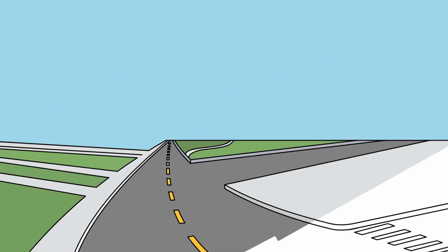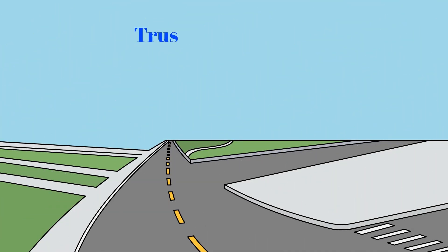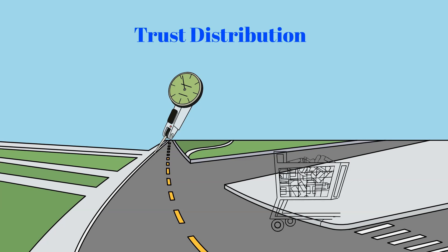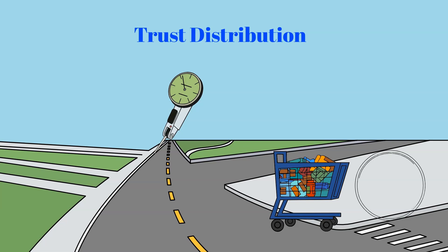The second component is trust distribution, which is responsible for providing the infrastructure required to evaluate the metrics used by the trust model to compute the rating. For example, how to calculate the number of successful transactions and how to disseminate this information to appropriate agents which act on these ratings.